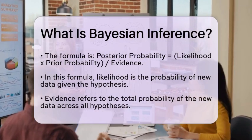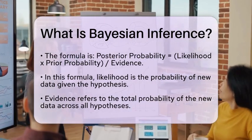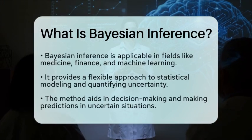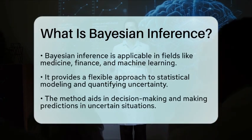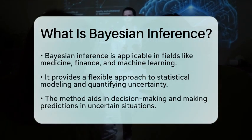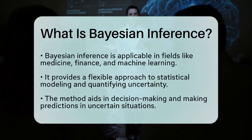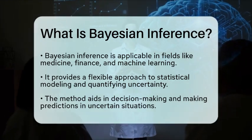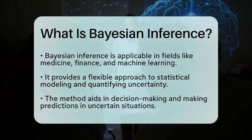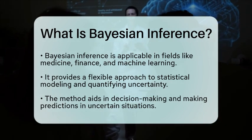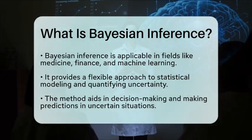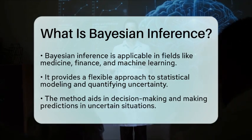Bayesian inference is widely used in various fields, including medicine, finance, and machine learning. It allows for a flexible approach to statistical modeling, where uncertainty can be quantified and updated as new information becomes available. This adaptability makes it a powerful tool for decision-making and predictions in uncertain environments.